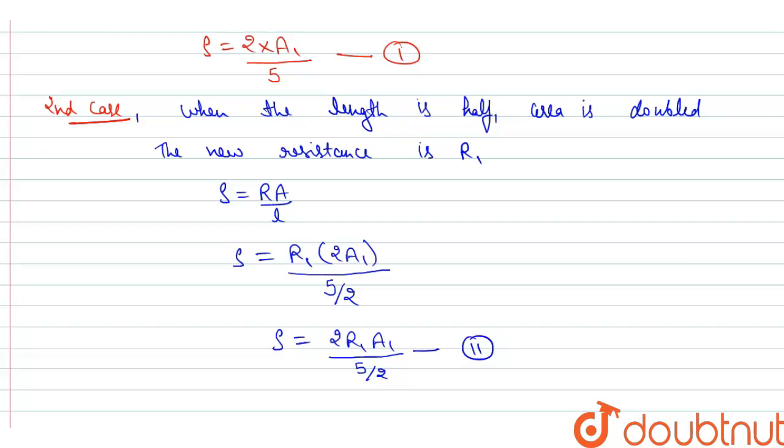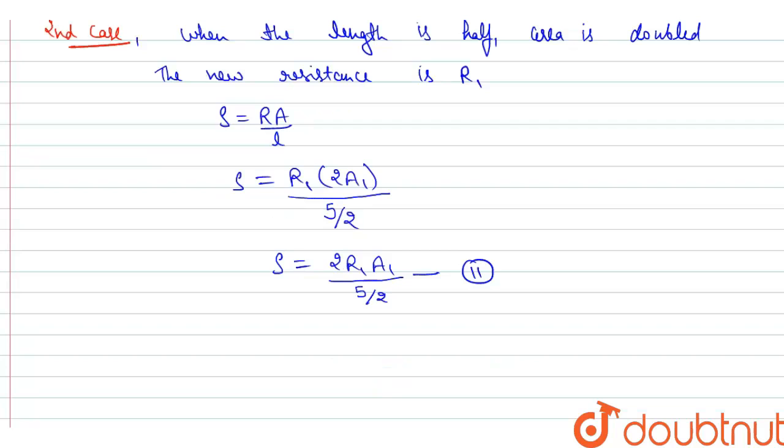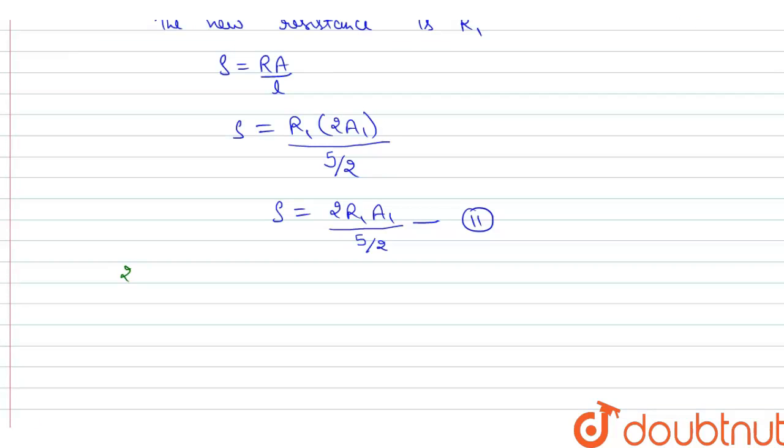From equation 1 and equation 2, we get: 2A1 over 5 equals 4R1A1 over 5. The 5 is cancelled out, A1 is cancelled out. This gives R1 equals 2 over 4. We got R1 equals 1/2.